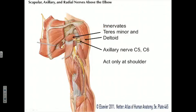The axillary nerve has a relatively small cutaneous distribution — it innervates only a small patch of skin largely over the attachment of the deltoid to approximately the middle of the humeral shaft.